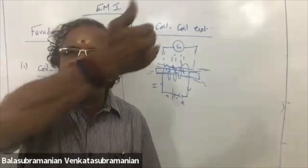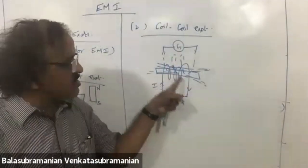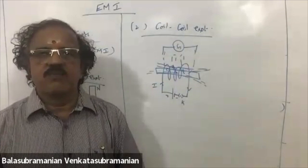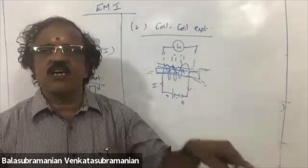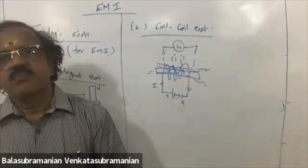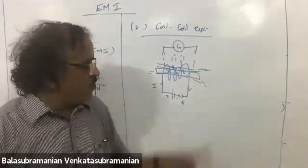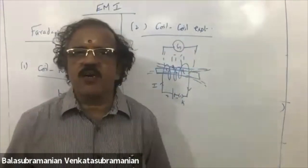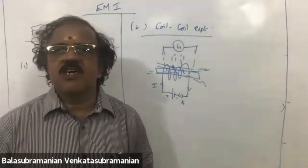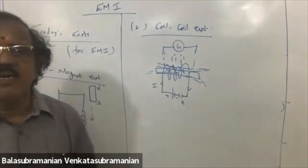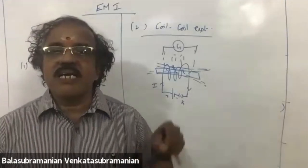When you release the key, current decreases, there exists a change in magnetic field in the primary coil, which produces a change in the secondary coil — there exists an EMF. So when you pass current through the primary coil, this is what happens. These are the two experiments by Faraday to introduce the concept of electromagnetic induction.